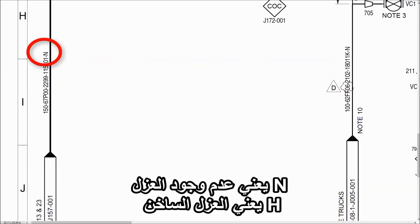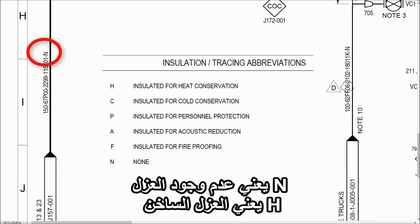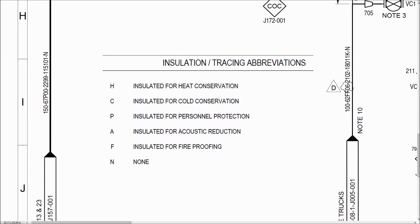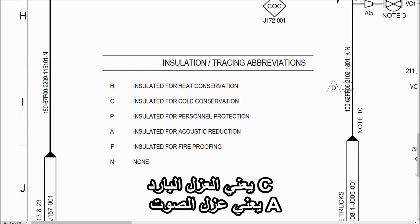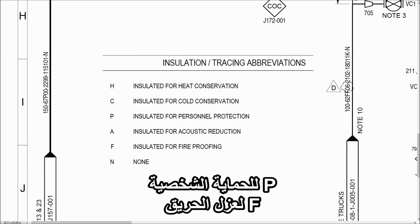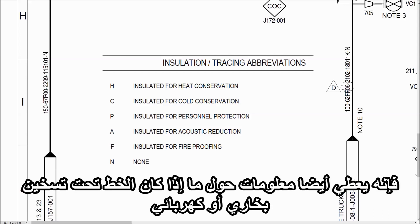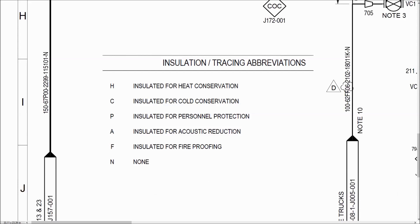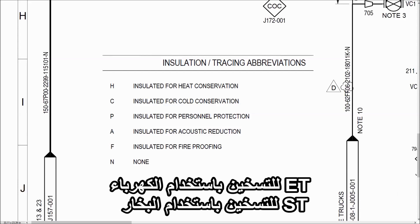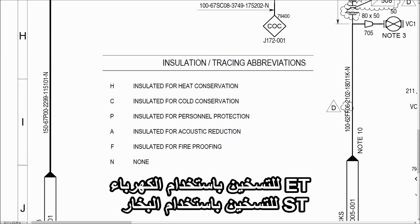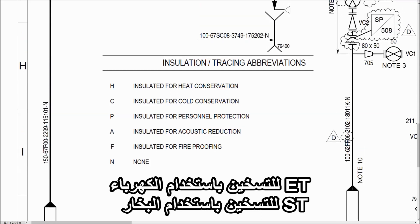Here, N means there is no insulation. If there is H, then hot insulation; C is for cold insulation; A for acoustic reduction; P for personal protection; F for fireproofing. It also gives information about whether the line is steam traced or electrically traced. Normally ET is used for electric tracing and ST is used for steam tracing.